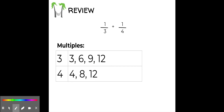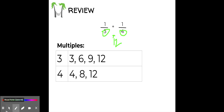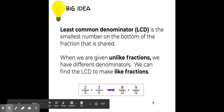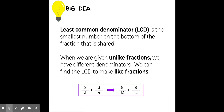Something else we talked about in adding unlike fractions: we could multiply both denominators to get a common denominator, but it won't always be the least common denominator. So keep that in mind — if you use this strategy you might have to simplify in the end. A big idea to remember is that the least common denominator is the smallest number on the bottom of the fraction. When we are given unlike fractions, we can find the LCD to make like fractions.